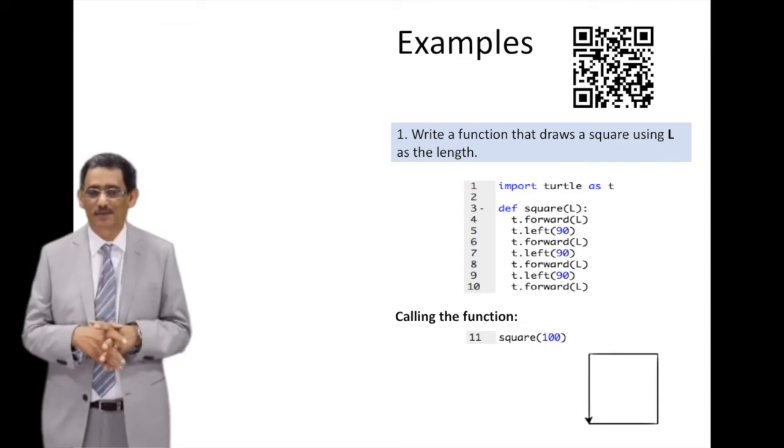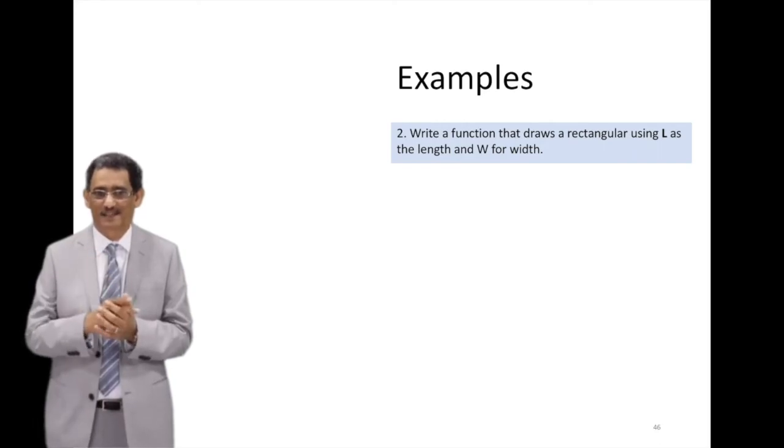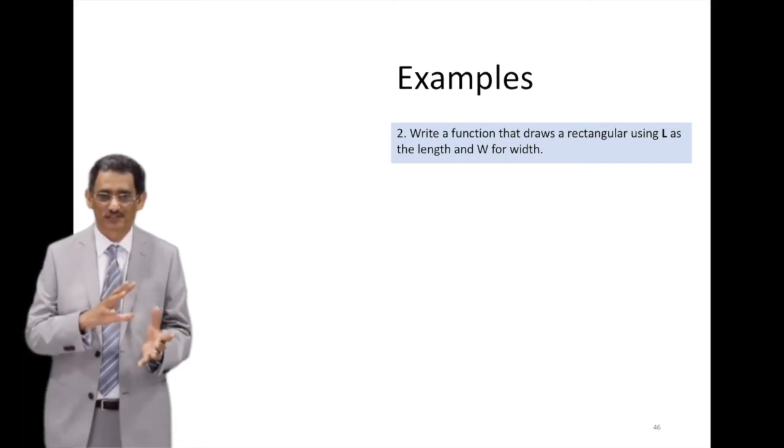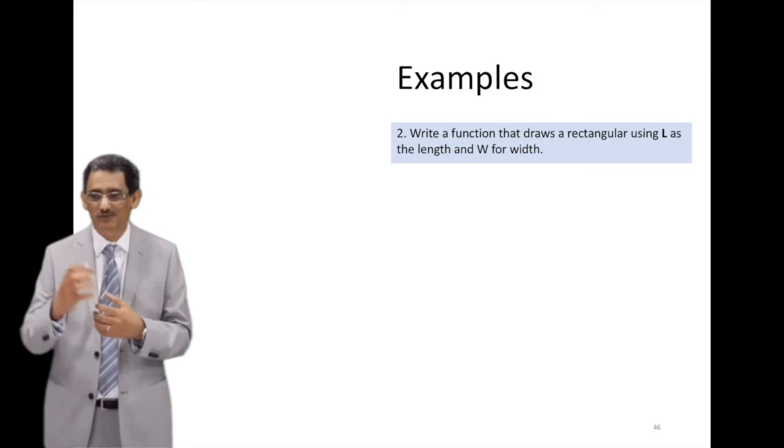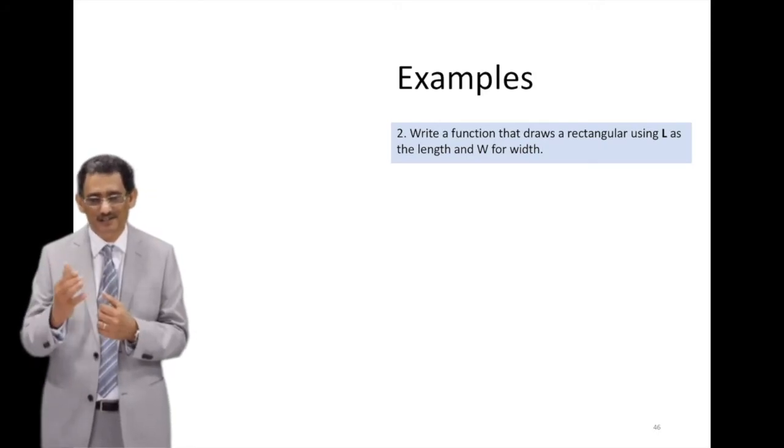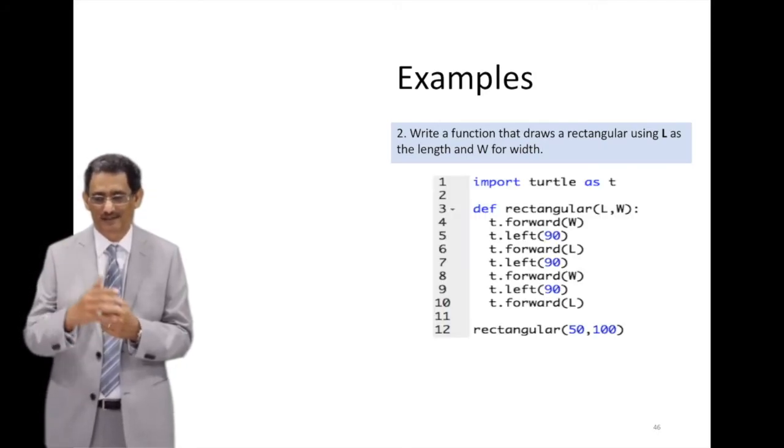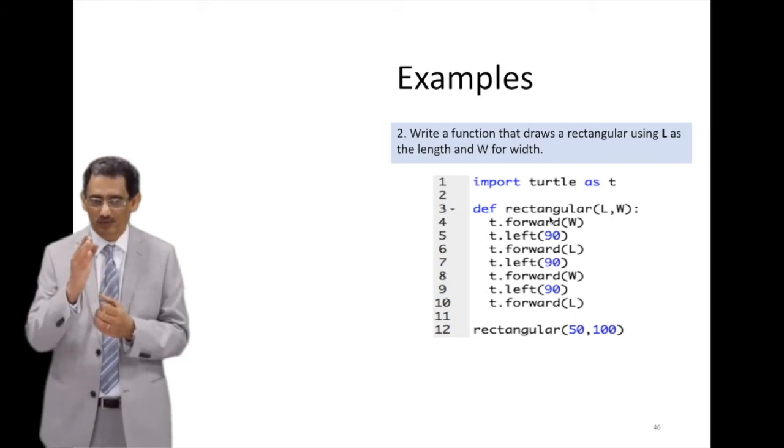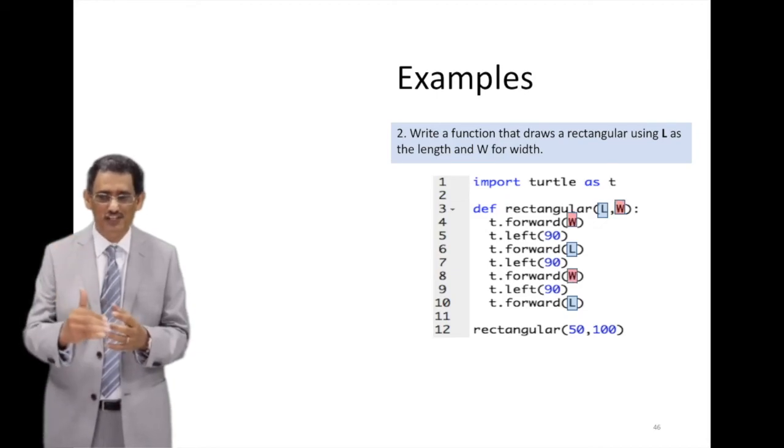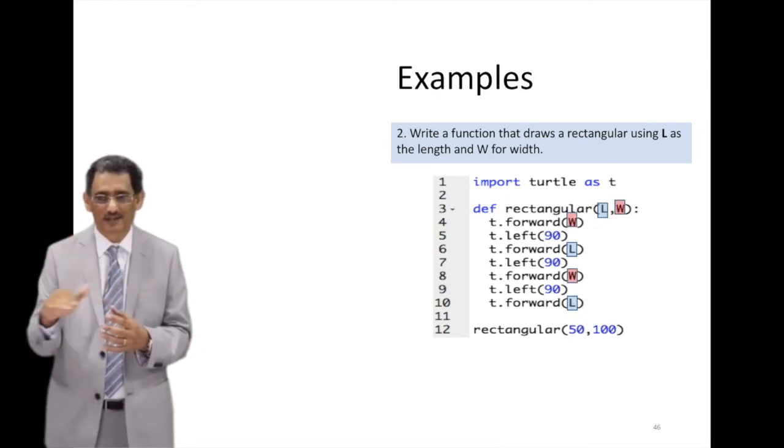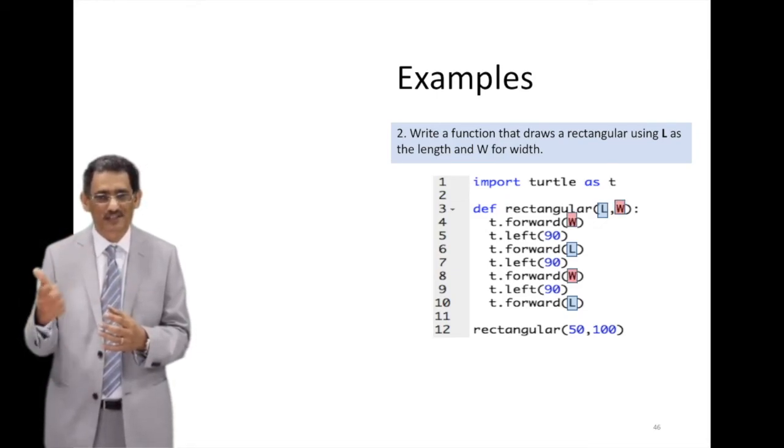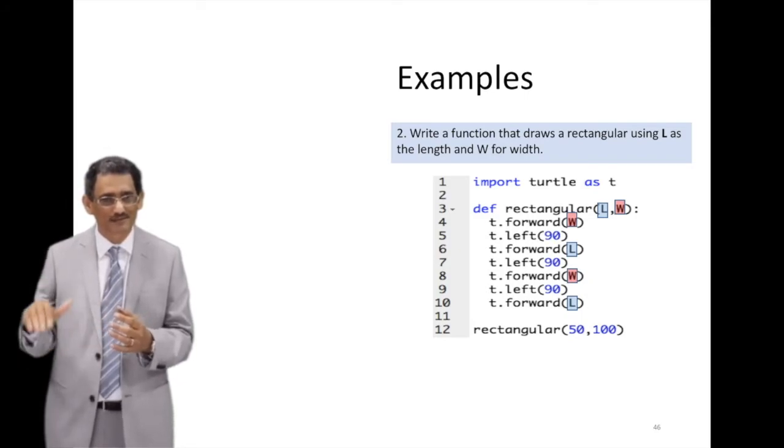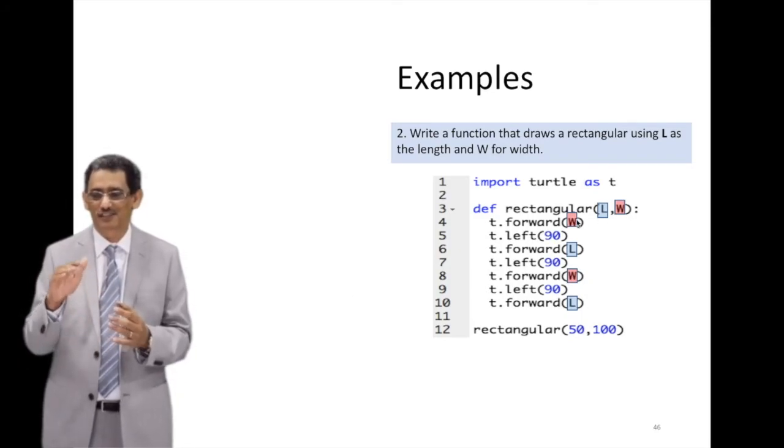Another example - now we've seen one variable, that's L. Now if that square, we want to change it and make it have length and width so we can have control on both of them, we can just change that function. We'll give it a new name, rectangular or rectangle. And then we'll have L, W - these are the two variables, and we change in the code. So one forward will be for W, the next forward will be for L, because you want to get the shape.